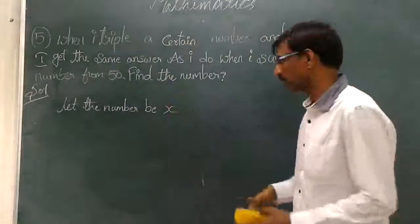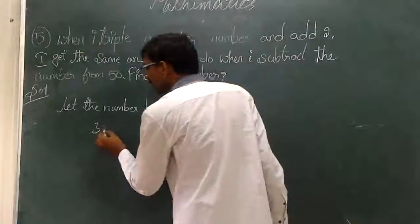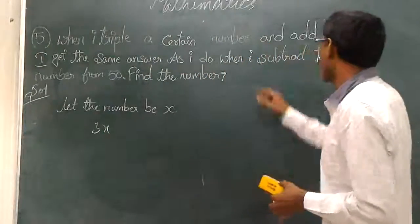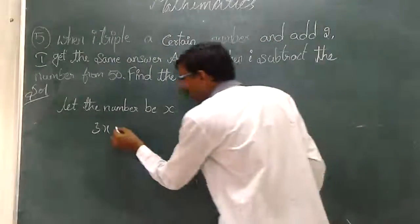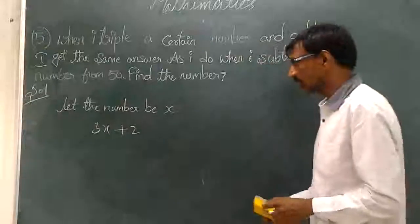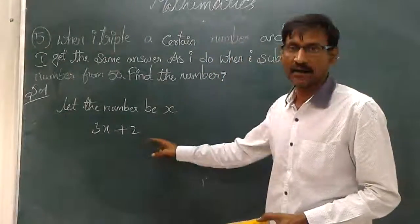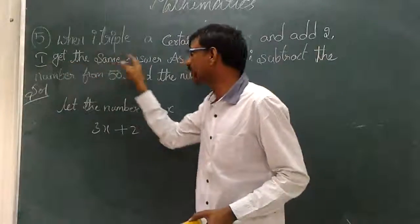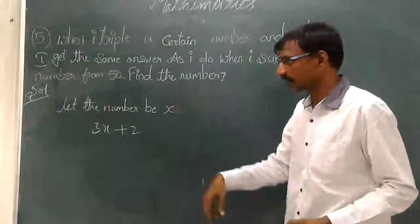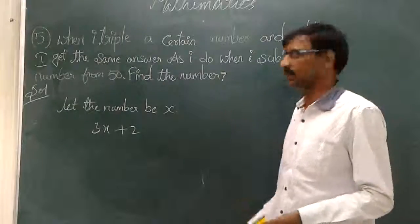When we tripled this number, tripled means what? 3 times x. And added 2 here. Now this is what result. Is it determined? I got the same result.